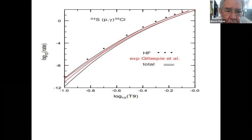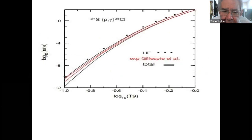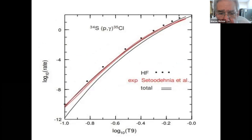The next plot compares with Gillespie. We see generally good agreement except for the lower temperature region. We also indicate the uncertainties in the Gillespie data, and just for reference, the Hauser-Feshbach statistical model is indicated. A more recent experiment from Setoodehnia disagrees a bit with the lower limit, and the low-temperature discrepancy is also visible there.